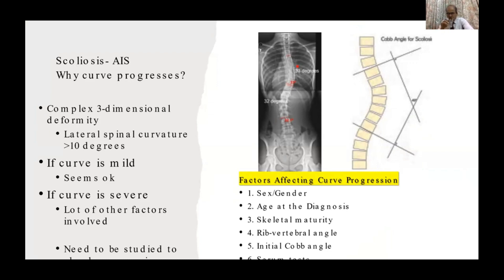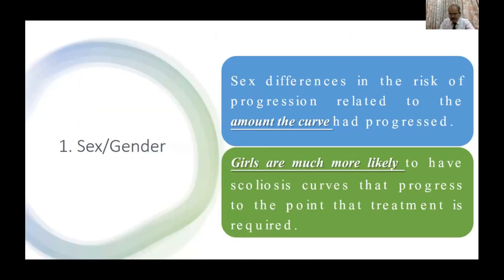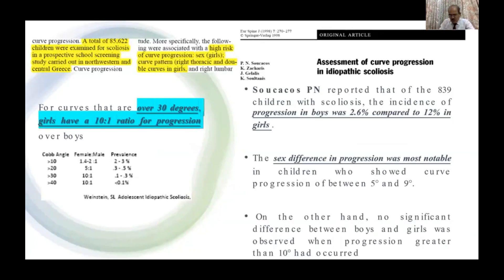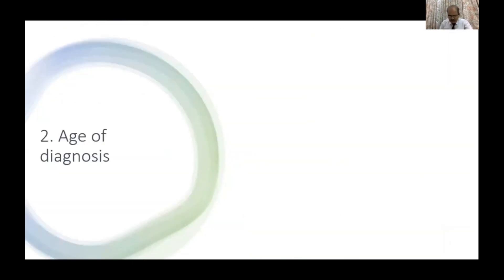The second talk discusses factors affecting scoliosis curve progression. Scoliosis is a three-dimensional deformity with a Cobb angle of more than 10 degrees. If the curve is mild it may be acceptable, but if severe, multiple factors affect progression. The first factor is sex or gender — girls are much more likely to have scoliosis curves that progress to the point requiring treatment. Literature suggests that if the curve is 30 degrees or more, girls have a 10:1 ratio of progression over boys.